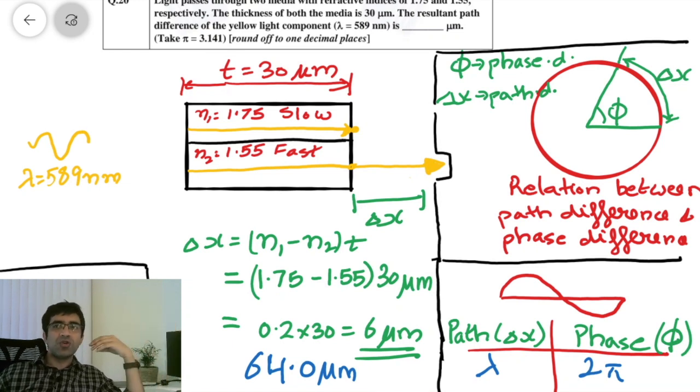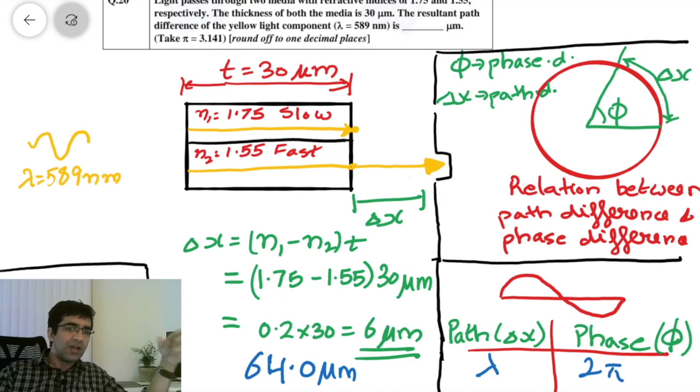So you would already know, I guess most of you, that a path difference of one wavelength, so if you have a path difference of one wavelength, that corresponds to a phase difference of 2 pi. Path difference of 180 degrees or pi corresponds to half a wavelength.